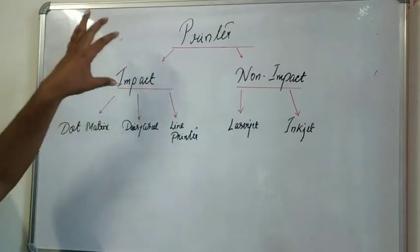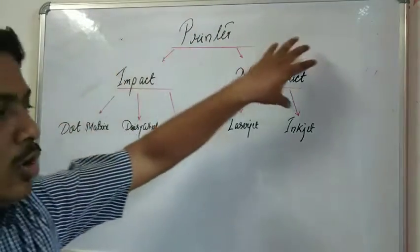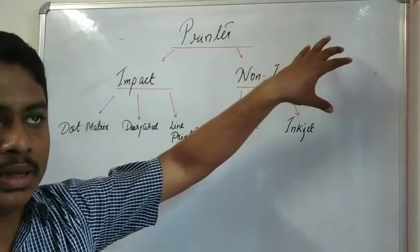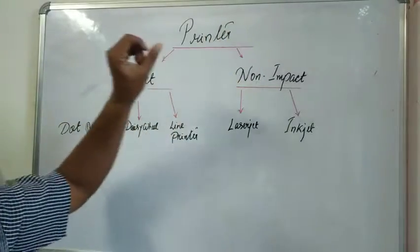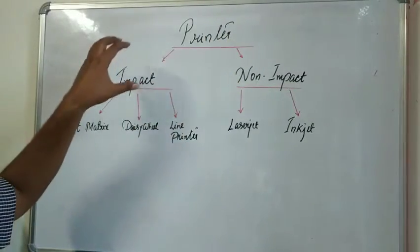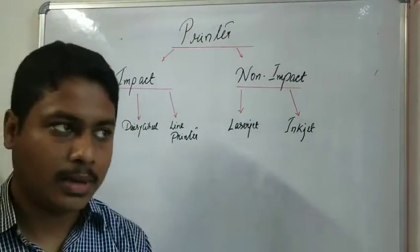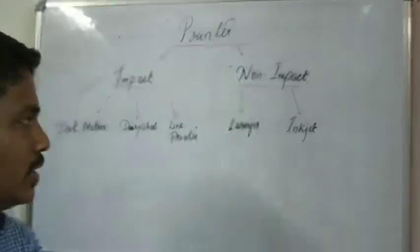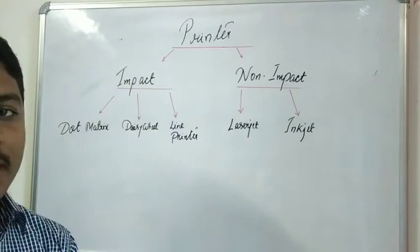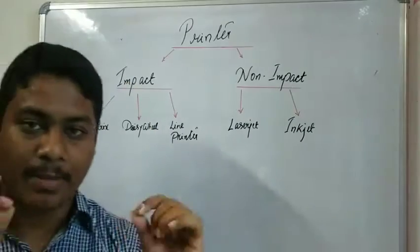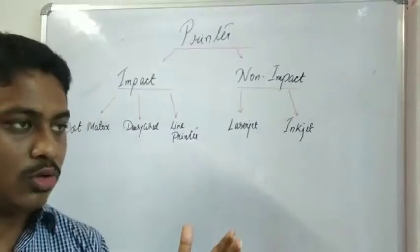The division of impact and non-impact printers — why do we call them impact and non-impact? The main difference is that impact printers use a hammer, where it strikes a ribbon to type on the page.